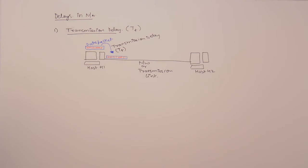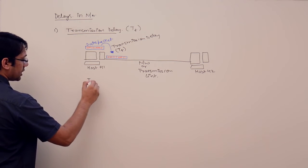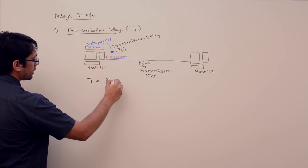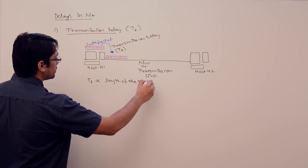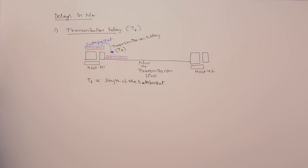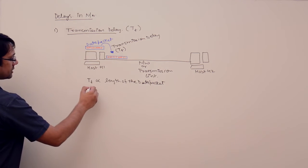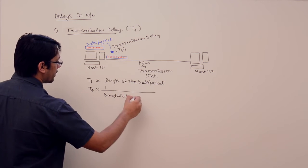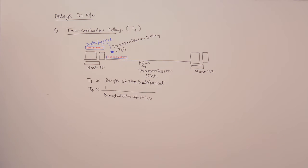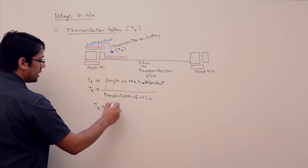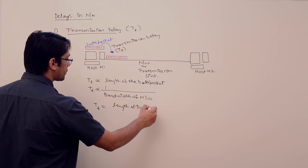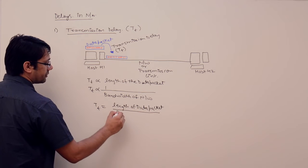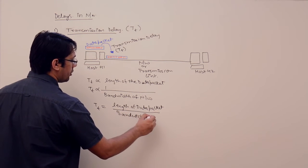What factors is transmission time dependent on? Transmission time is directly proportional to the length of the data packet — that is, the number of bits in the packet. It is also inversely proportional to the bandwidth of the network, because if you have more bandwidth, transmission time will be less, and vice versa. So transmission time equals length of the data packet divided by bandwidth of the network.